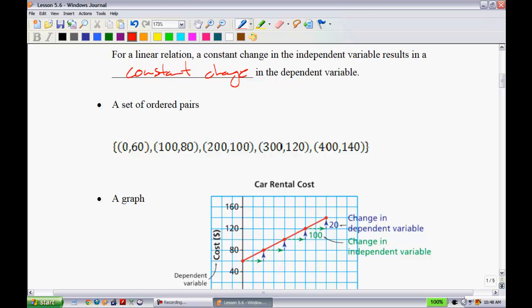Let's take a look at this set of ordered pairs. This is the same ordered pairs that we dealt with in the graph. How do you know that this is a linear relation? Again, if you look at the x values: 0, 100, 200, 300, 400, notice how they're all going up by 100 every time. Then if we look at the y values: 60, 80, 100, 120, 140, notice that they're all going up by 20 each time.